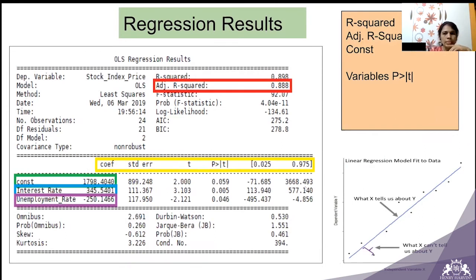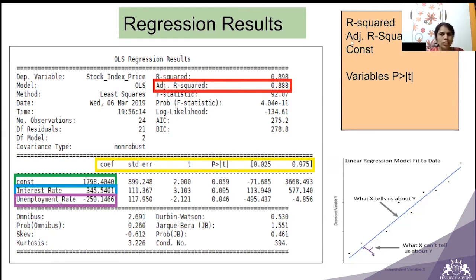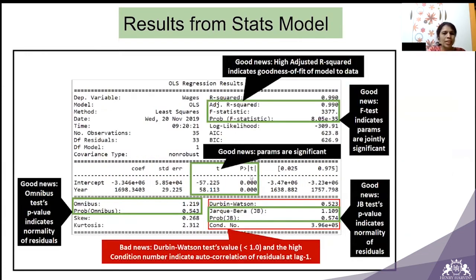Now you can see some new terms: R-squared and adjusted R-squared. When we build a model, we should evaluate it — we need to know whether the model is good or bad. For regression, we can check R-squared or adjusted R-squared; these two are the metrics to assess model performance. Here you can see R-squared is 0.898 and adjusted R-squared is 0.888. When we write the code we will get these values and determine whether the model is good or bad.